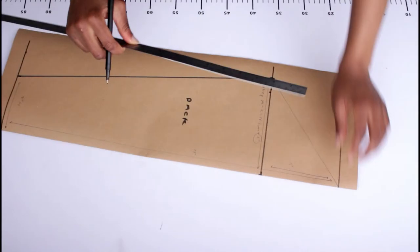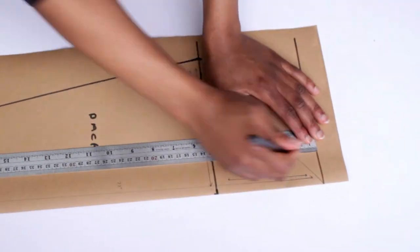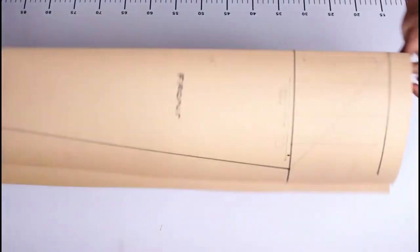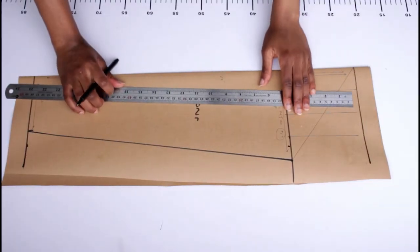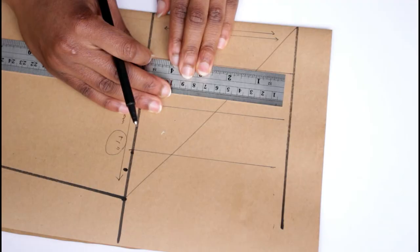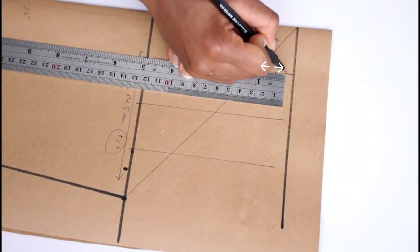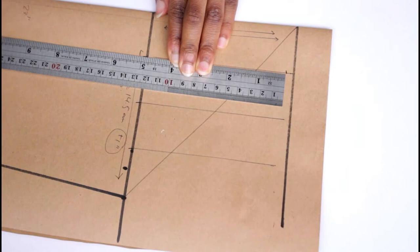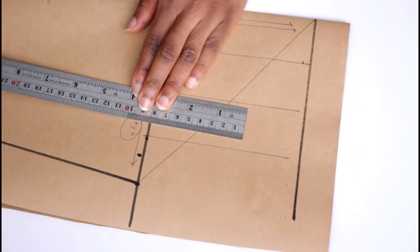Once you've done that for the front you're going to turn it around and do the exact same for the back. You want the front to be the most curved. You need a bit more movement at the front because of the curves at the front of your body.